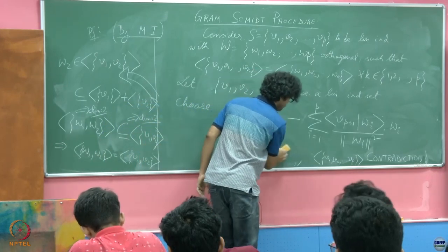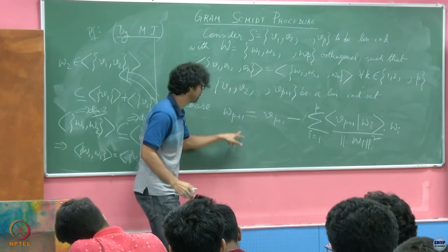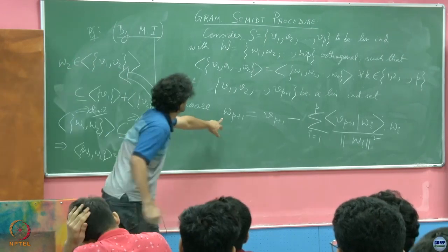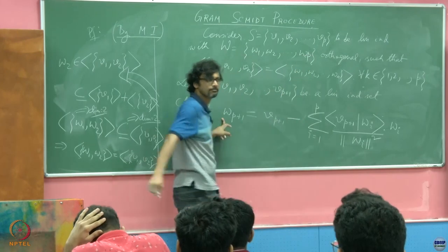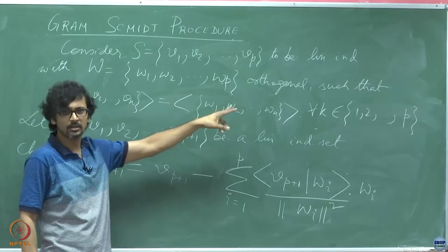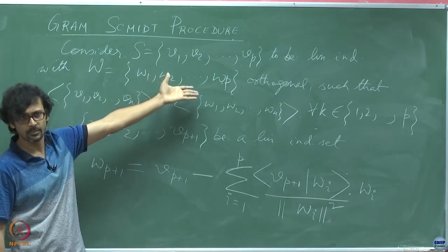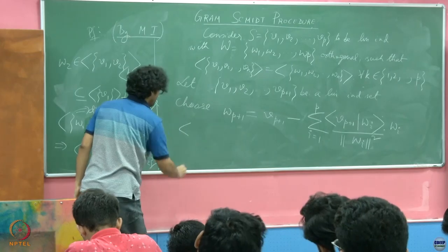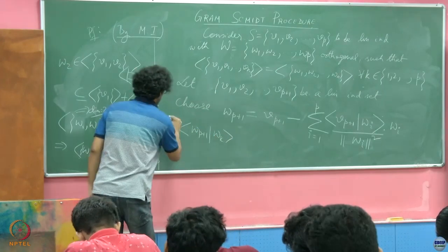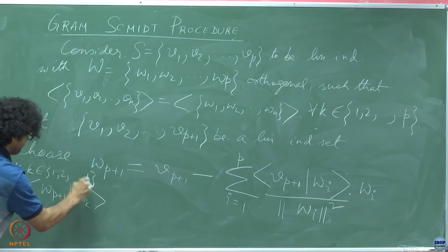Next question is of course about the orthogonality. So after all this effort that we have put in to construct this W P plus 1, this must be orthogonal with each of the first P W i's. That is, this must be orthogonal to W 1, W 2, W 3 till W P, otherwise the set would not be orthogonal. The rest I do not need to check. Mutual orthogonality between these fellows is already checked, the only checks I need to perform are with P plus first fellow with all of these first P. So let us take the inner product, so the inner product with W P plus 1 and W K, suppose K belongs to 1, 2, any of those. So what happens?